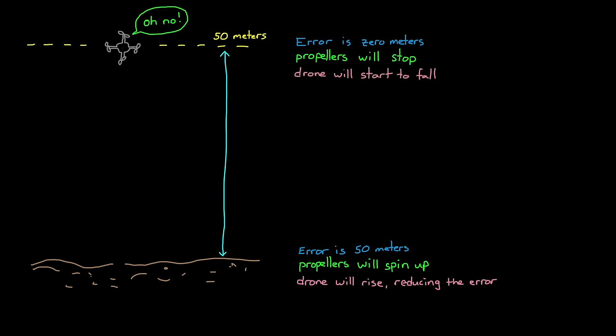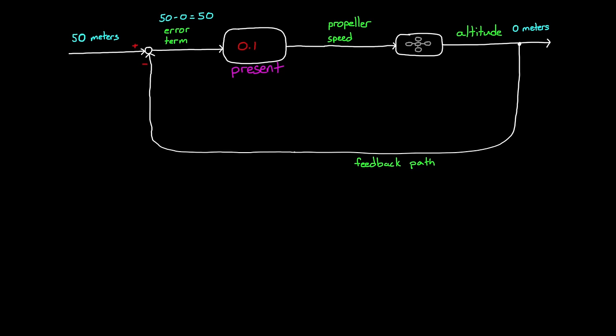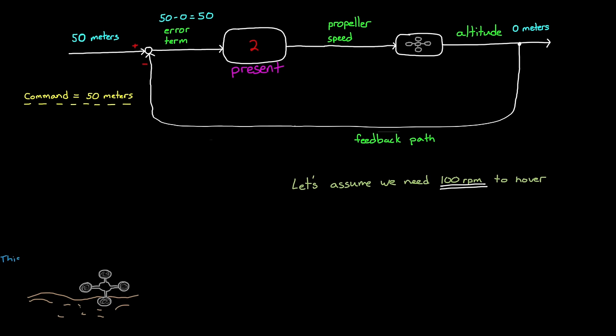Now when that happens, the propeller speed would start to increase again as the error grew. There is a certain propeller speed where the lifting force is exactly equal to the weight of the drone. And at that speed, the drone will hover. So where would our proportional controller hover this drone? Well, that depends on the controller gain. Now let's assume for the moment that the propellers need to spin at 100 RPM in order for the drone to hover. If our proportional gain was 2, then the drone would hover right at ground level, since an error of 50 times 2 is 100 RPM.